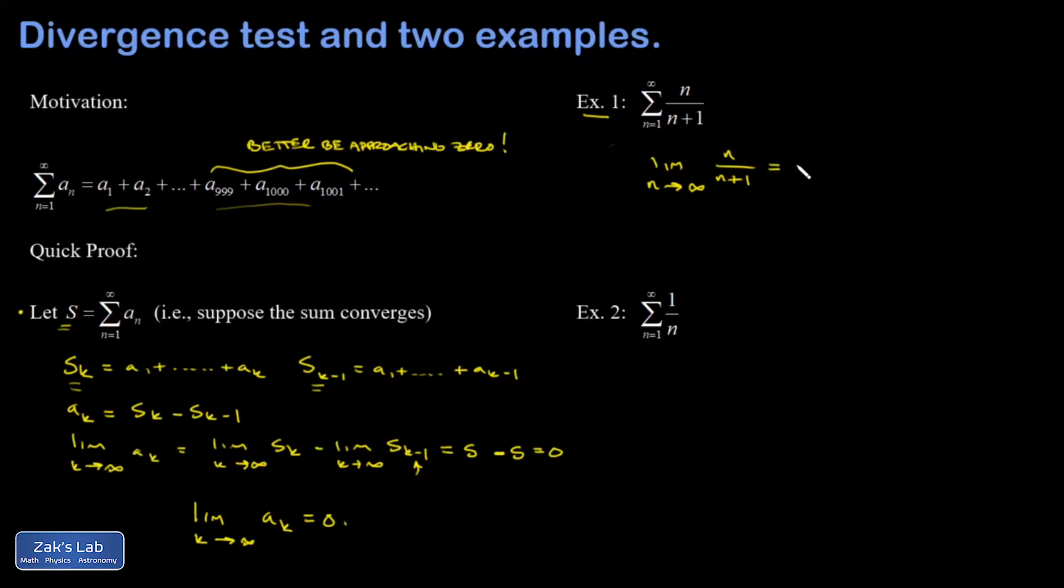Informally, if I just think about the highest power of n, it dominates the numerator, and likewise for the denominator. This is approaching n over n, which is one. If I handle it a little more formally, I have to divide the top and bottom by the highest power of n, and that gives me one over one plus one over n.